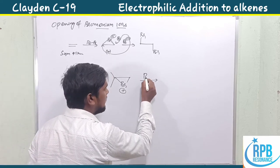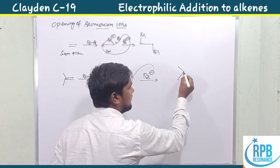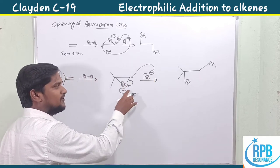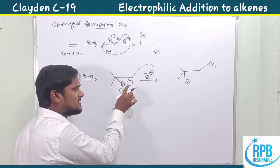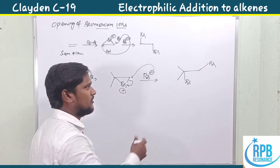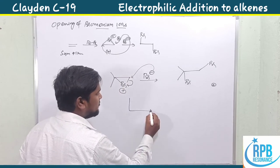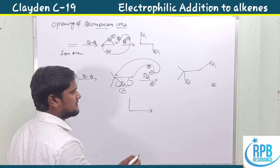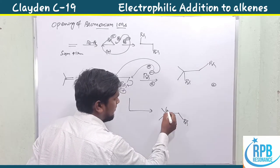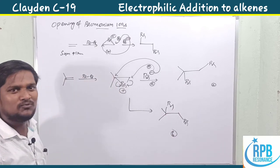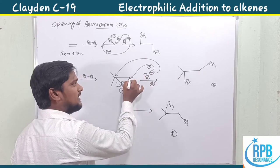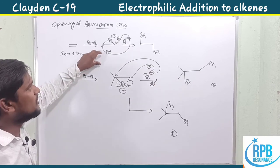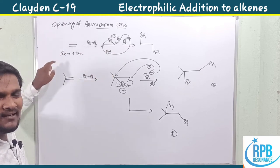After the bromide attacks the sterically less crowded side, the bonding electrons shift to the bromine atom which becomes neutral, and we get a Br-containing product. If bromide attacks the sterically more crowded side instead, we still get the same product — both pathways give the same outcome. So whether in a symmetrical or unsymmetrical case, bromonium ion opening gives the same product regardless of which side is attacked.